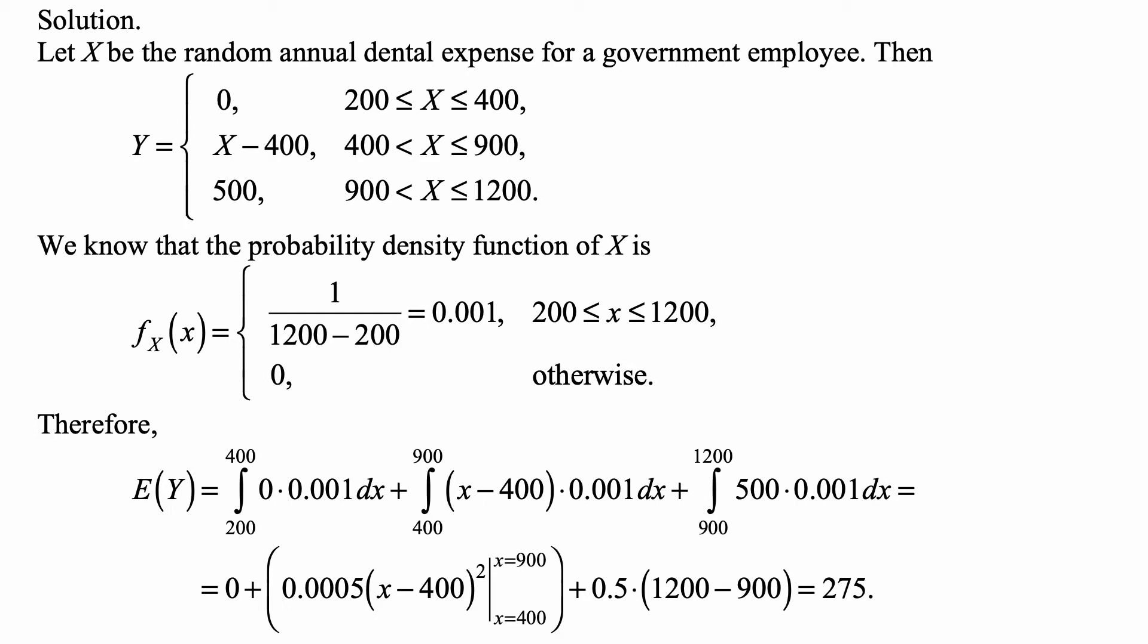So for X between 400 and 900, the payment is X minus 400. But if X exceeds 900 and it's between 900 and 1200, only a payment of 500 is made because that's the maximum that the supplemental policy will pay. So Y equals zero when X is between 200 and 400, X minus 400 when X is between 400 and 900, and 500 when X is between 900 and 1200.